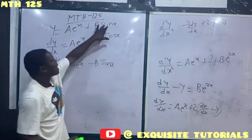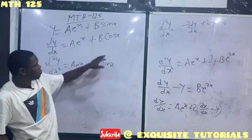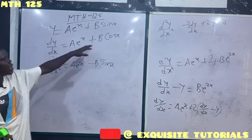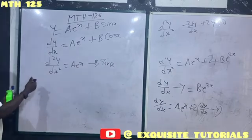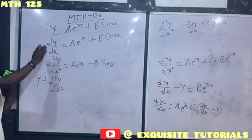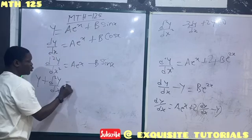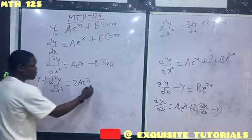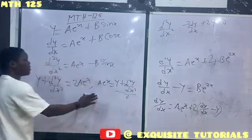To eliminate b·sin x, I work with the original equation and the second derivative, because both contain b·sin x (with opposite signs). Adding these two equations: y plus d²y/dx² equals 2a·e^x, since the b·sin x and minus b·sin x cancel. So a·e^x equals (y plus d²y/dx²) divided by 2. I keep this as a·e^x to avoid writing exponentials repeatedly.